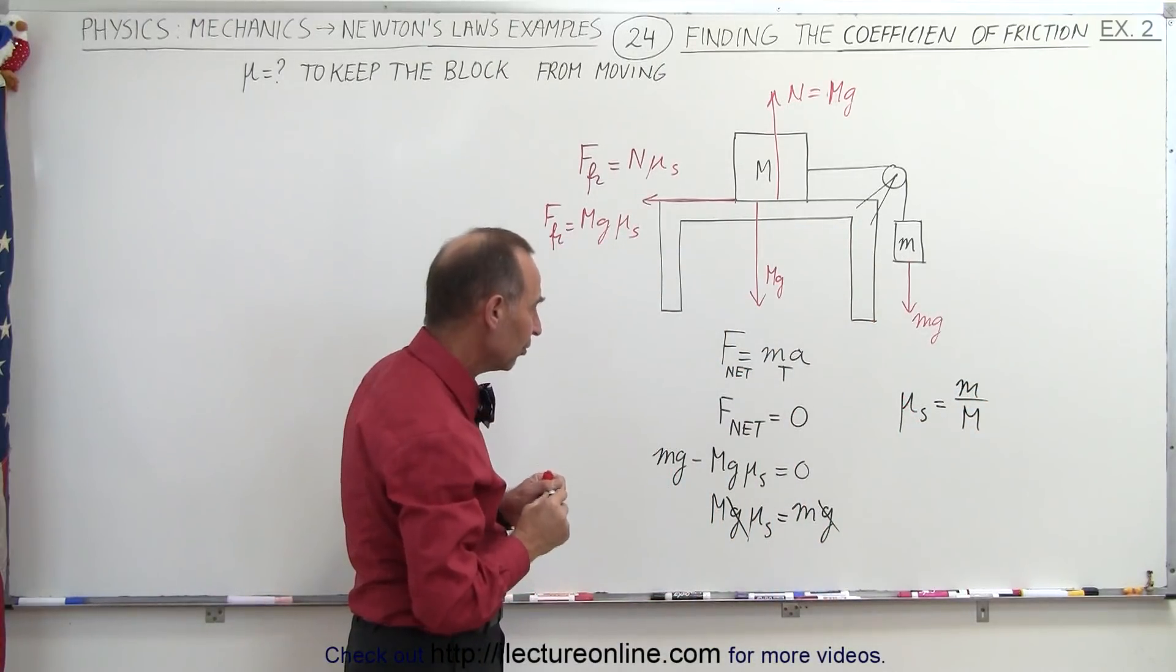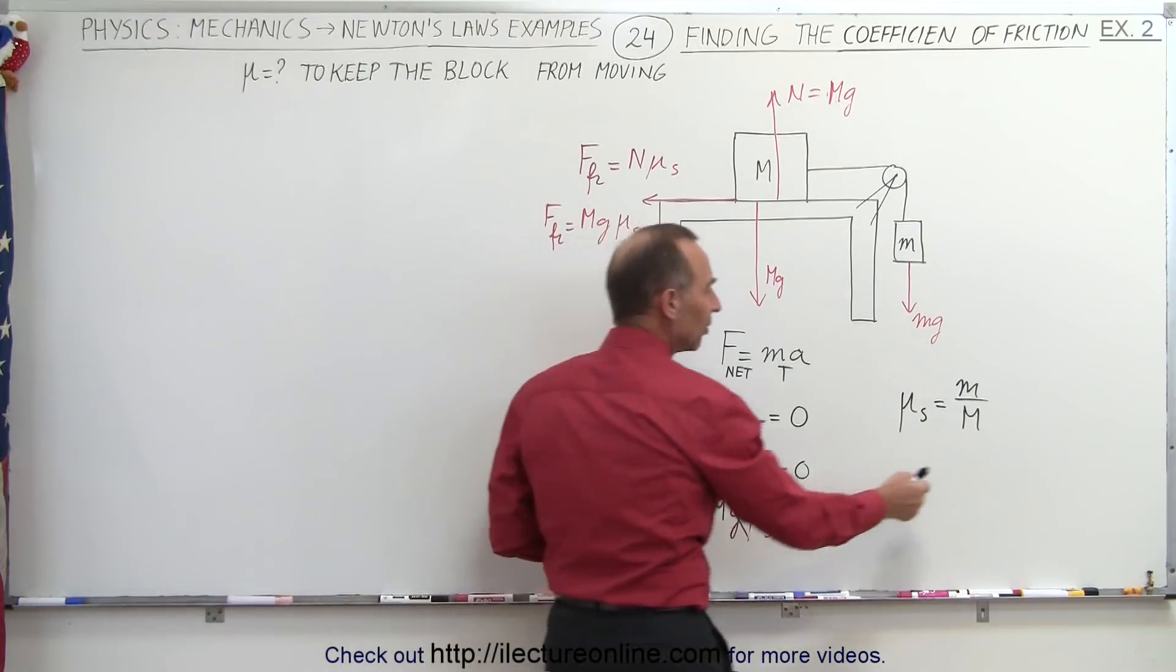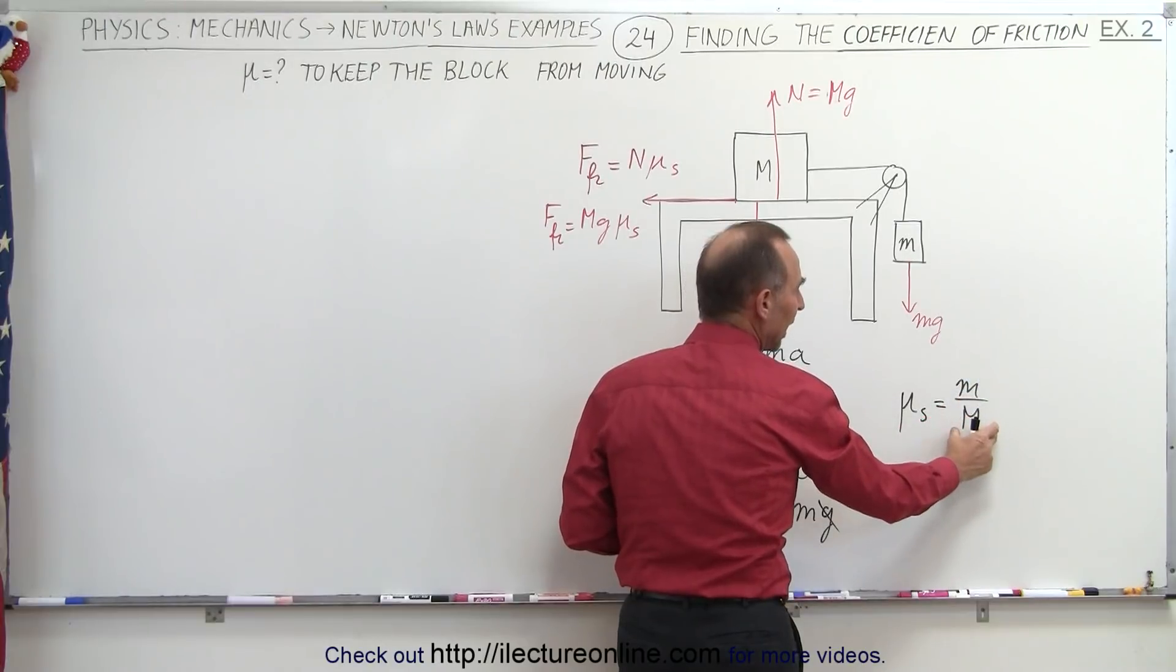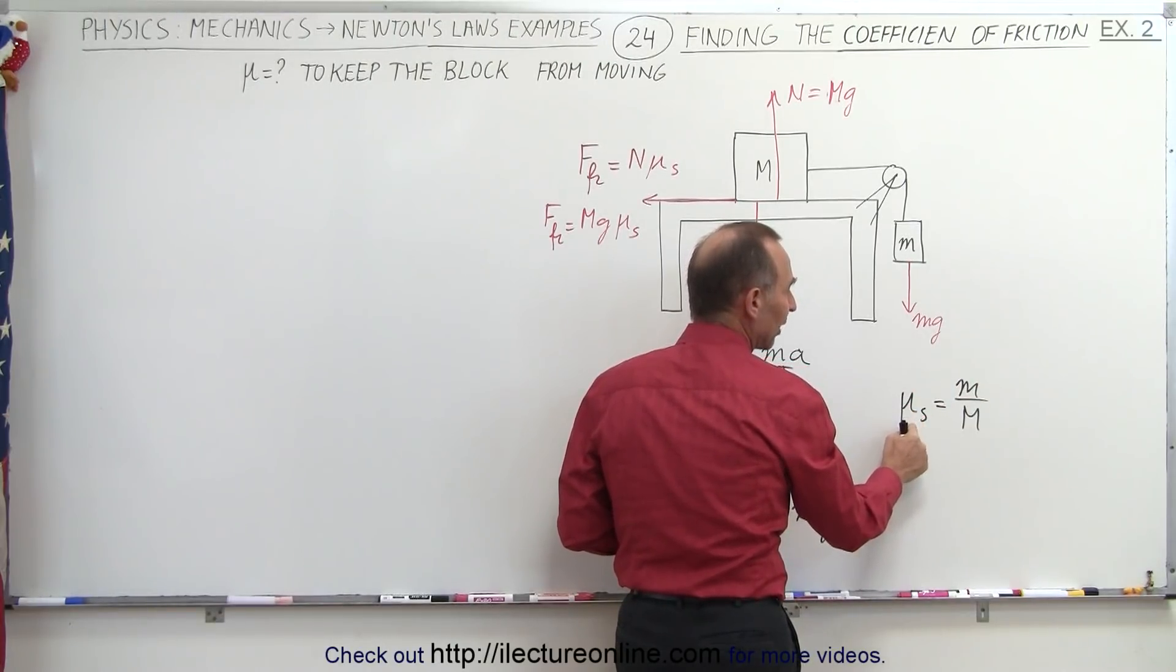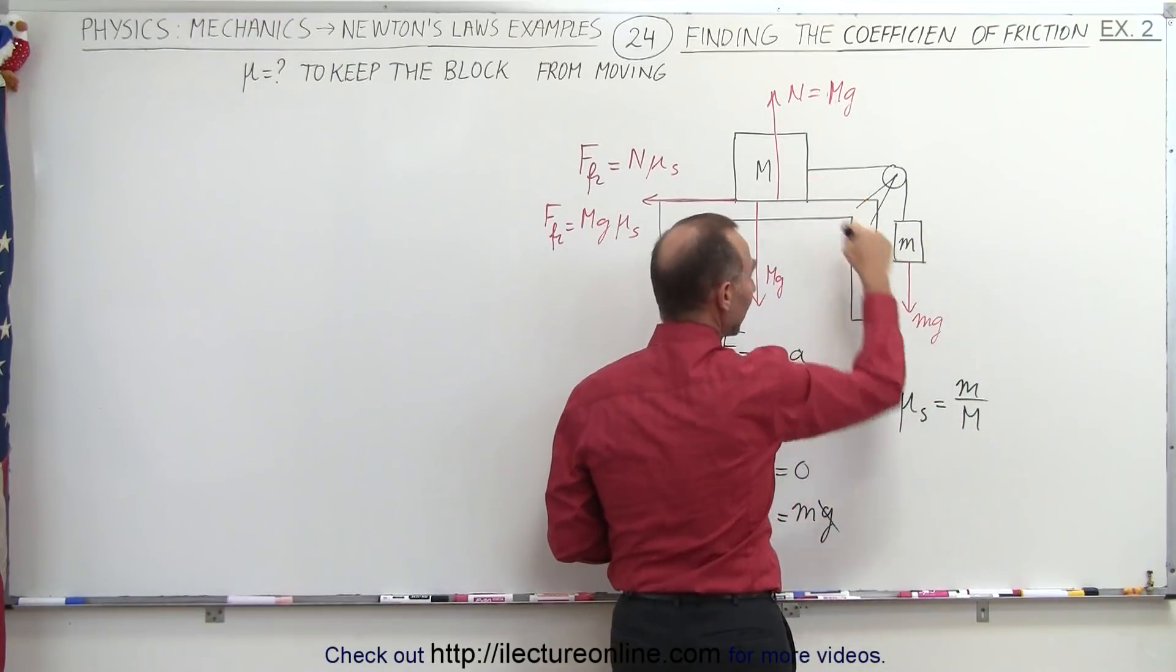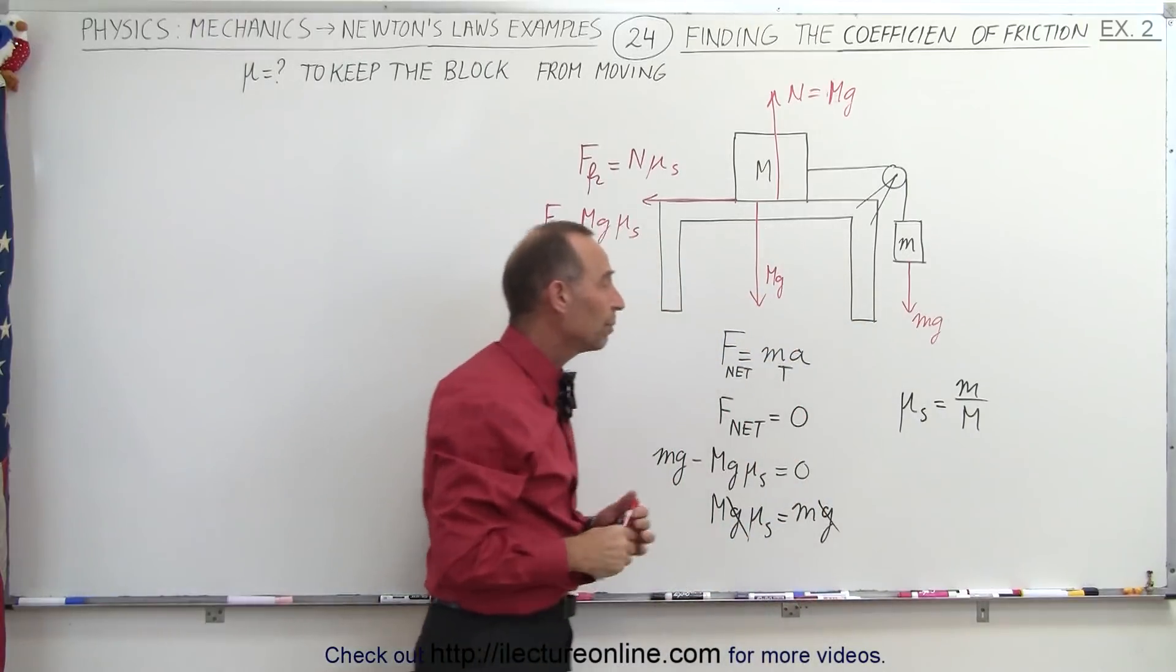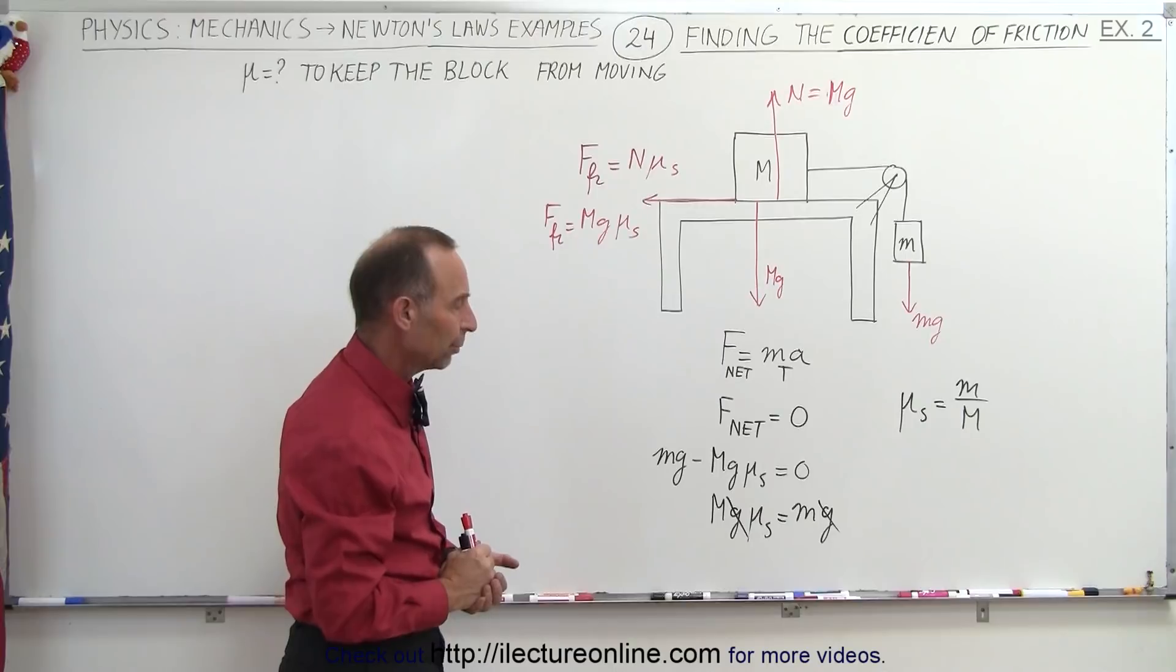So the coefficient of static friction has to be at least as big as the ratio of the small mass divided by the big mass. Now if they're equal to one another, then the coefficient of static friction would have to be one. If small M is smaller than big M, then the coefficient of static friction should be equal to the ratio of small M over big M, which is going to be less than one.